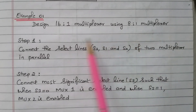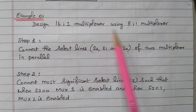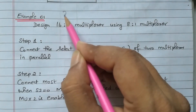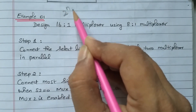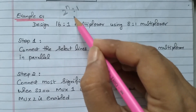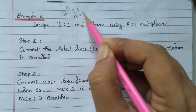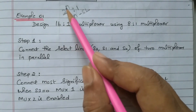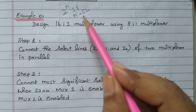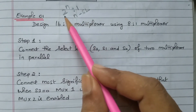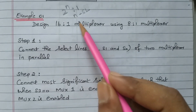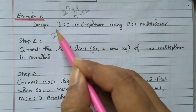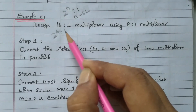Now we will go to the topic. We need to design a 16-to-1 multiplexer using an 8-to-1 multiplexer. A multiplexer has 2 to the power n inputs and 1 output with n selection lines. For a 16-to-1 multiplexer, that is 2 to the power 4, we have 16 inputs and only 1 output.